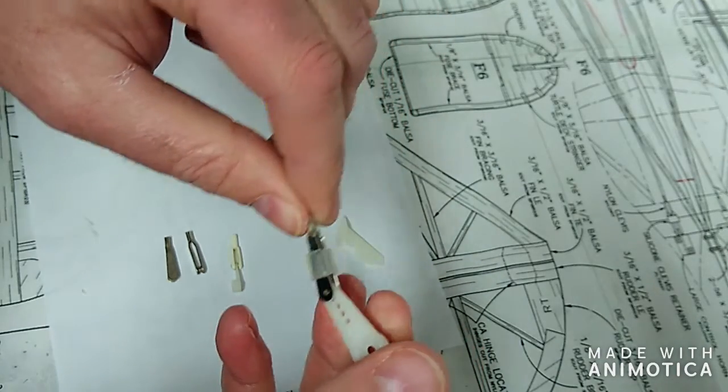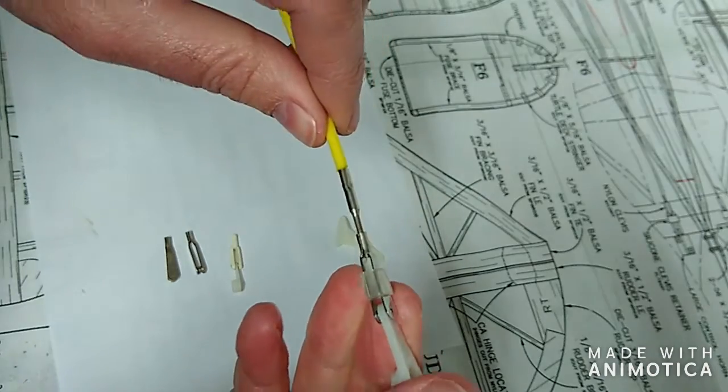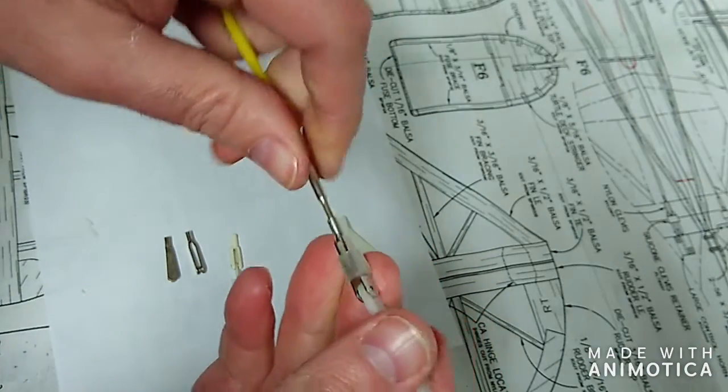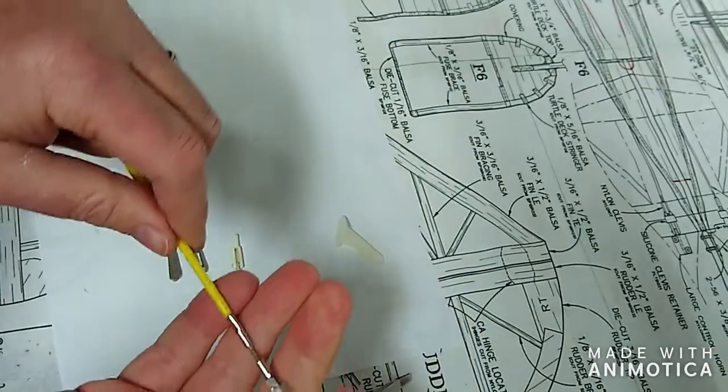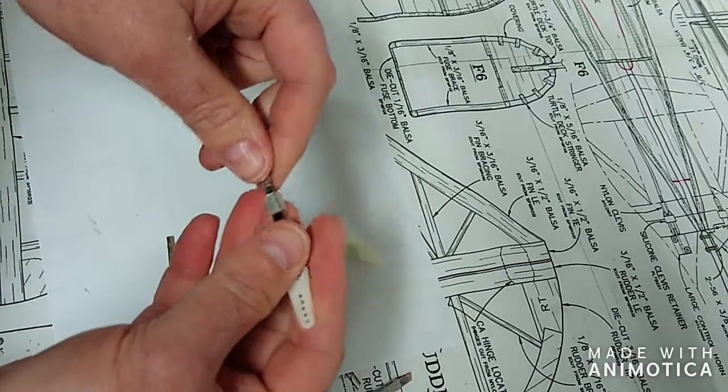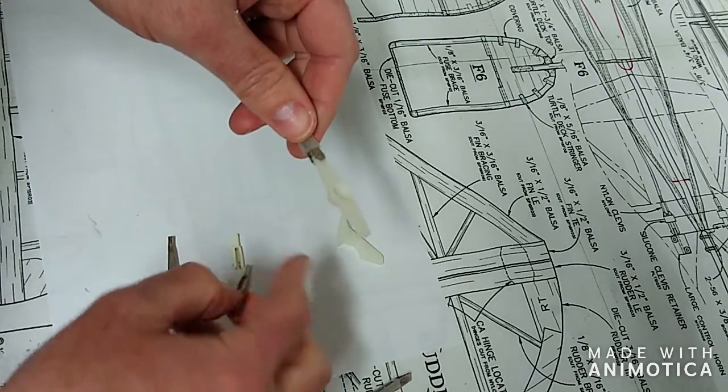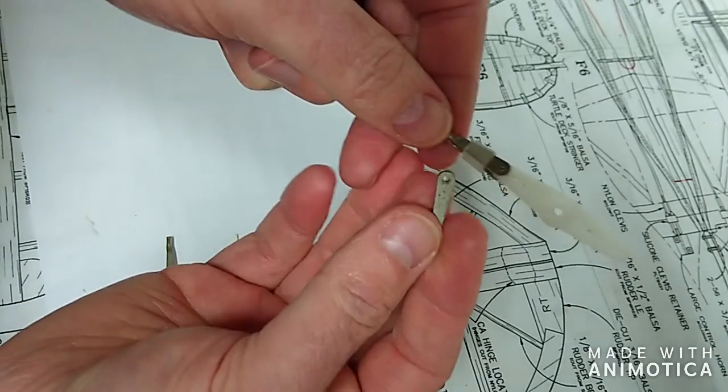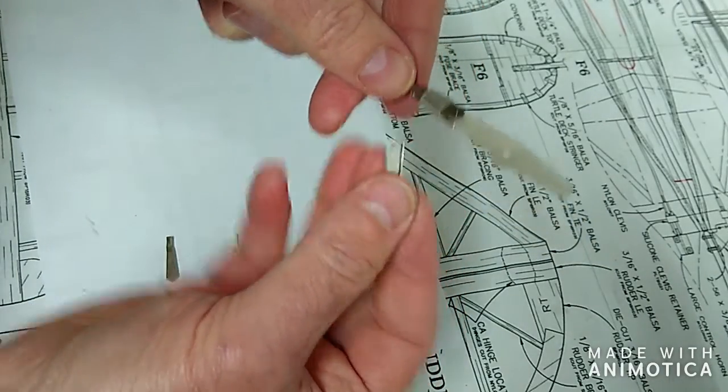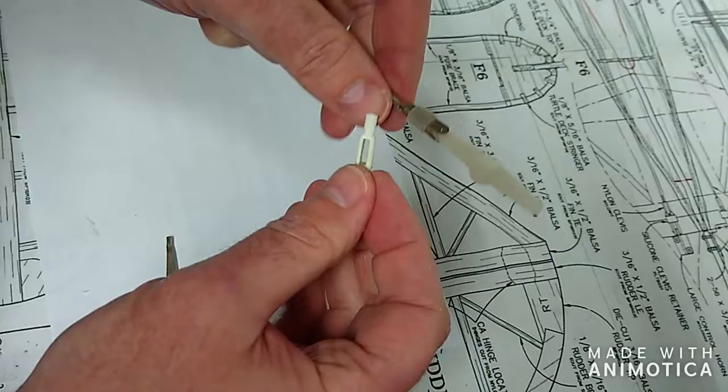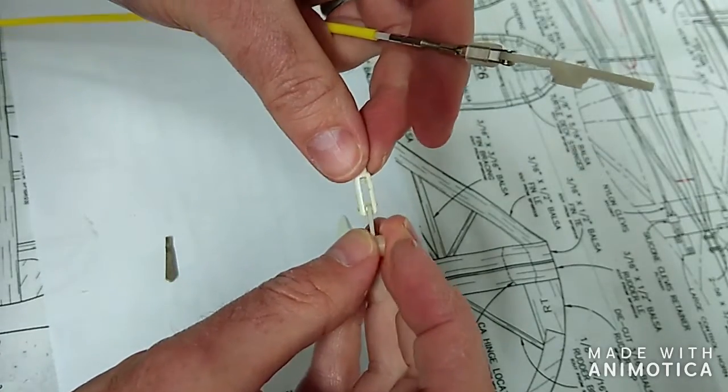Some clevises come with a separate locking clip that hooks over the pins to secure the link in place. Clevises themselves come in a variety of sizes to suit their end application and can be made from either steel or nylon. These ones are steel. And this is an example of the nylon type.